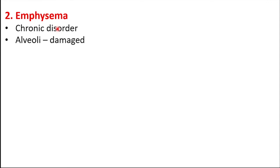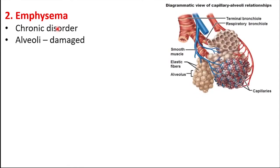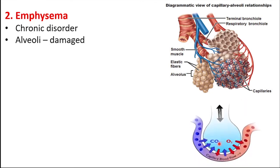The next respiratory disorder is emphysema. It is a chronic disorder in which the alveoli of lungs are damaged. Alveoli are small sac-like structures — the units of lungs. They are sites of gas exchange and increase the surface area of diffusion of respiratory gases. Gases are diffused efficiently through the larger respiratory membrane of alveoli. As the surface area is more, larger volumes of gases can diffuse into and out of lungs. This is the normal condition.